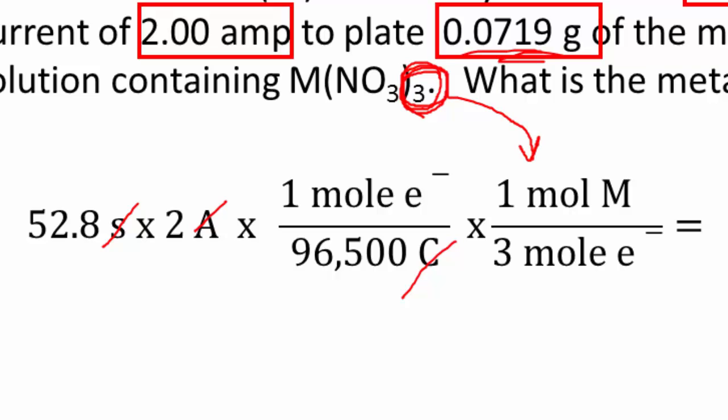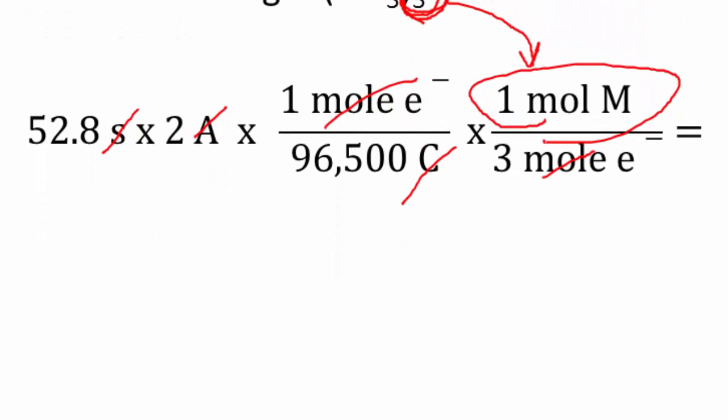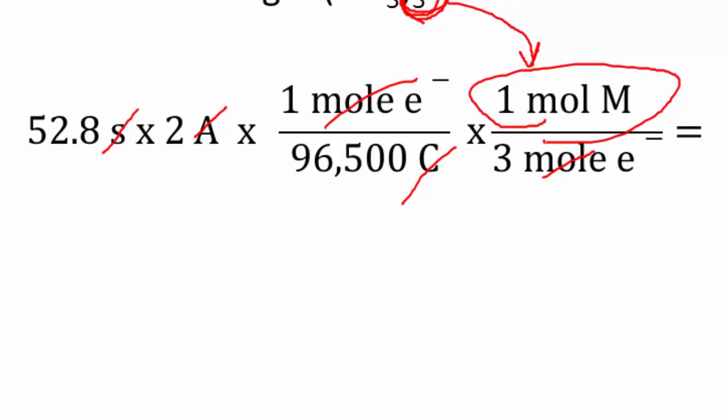So we're going to say we have three moles of electrons for one mole of the metal. The moles of electrons cancel out. Now I have moles of M, M standing for metal. Hopefully you know the next step. I just need to take the mass of the metal which I have which is 0.0719 grams divided by the moles of the metal.